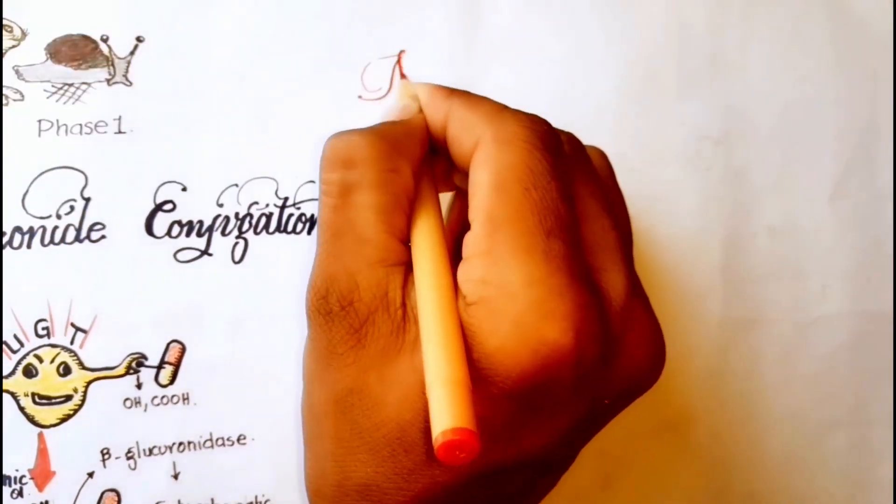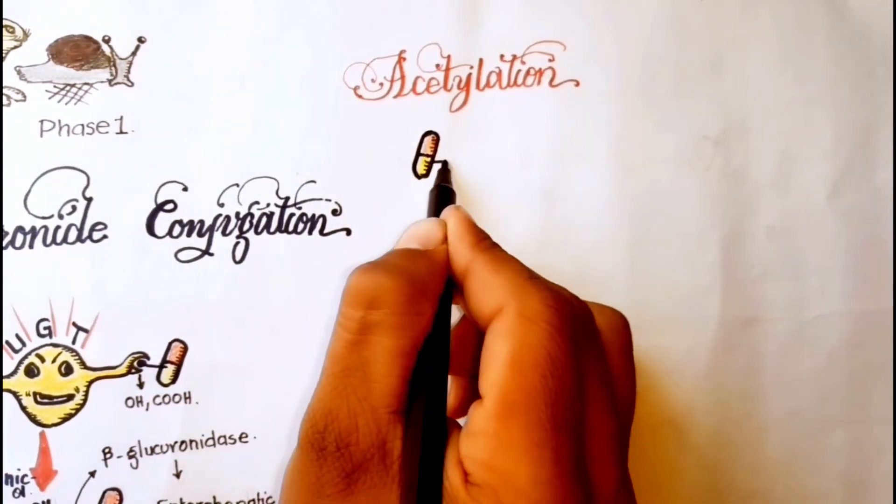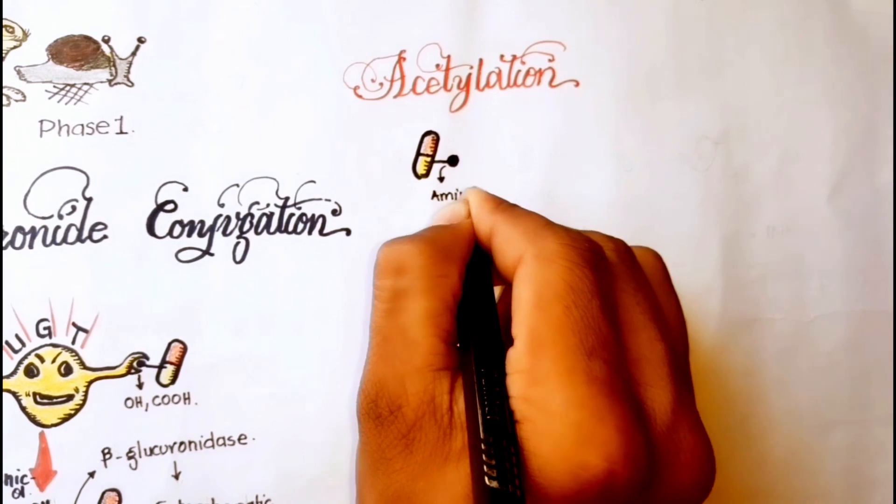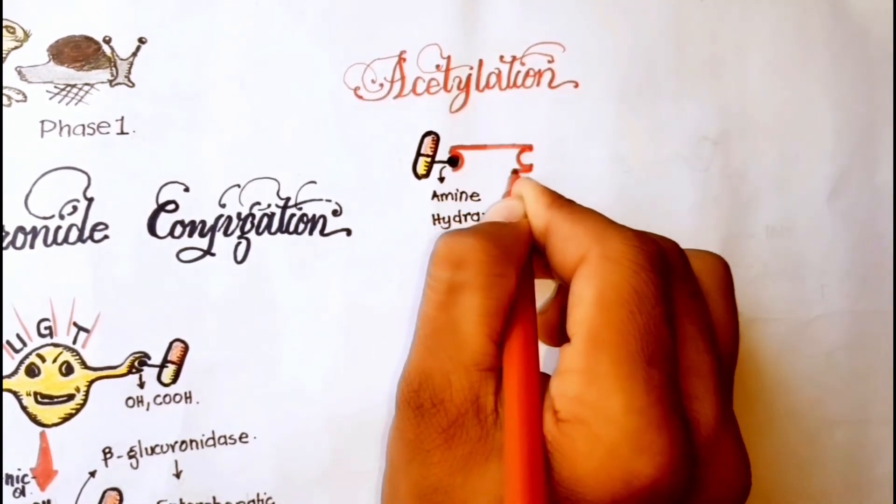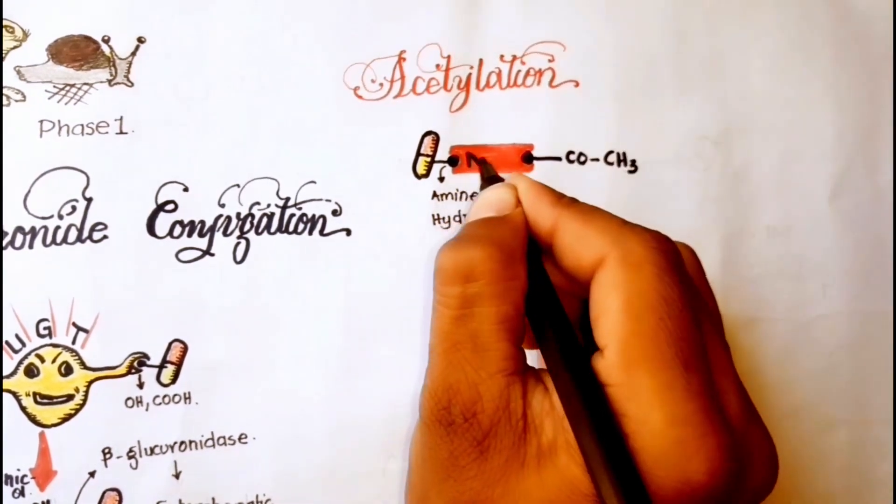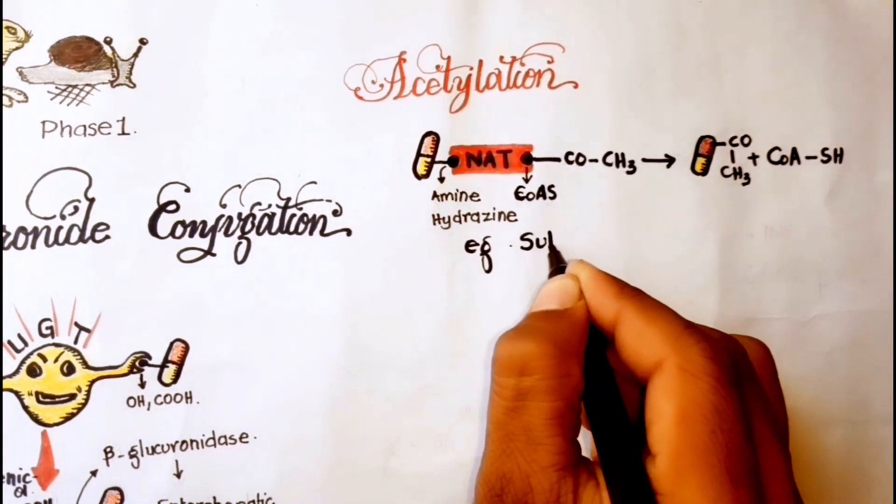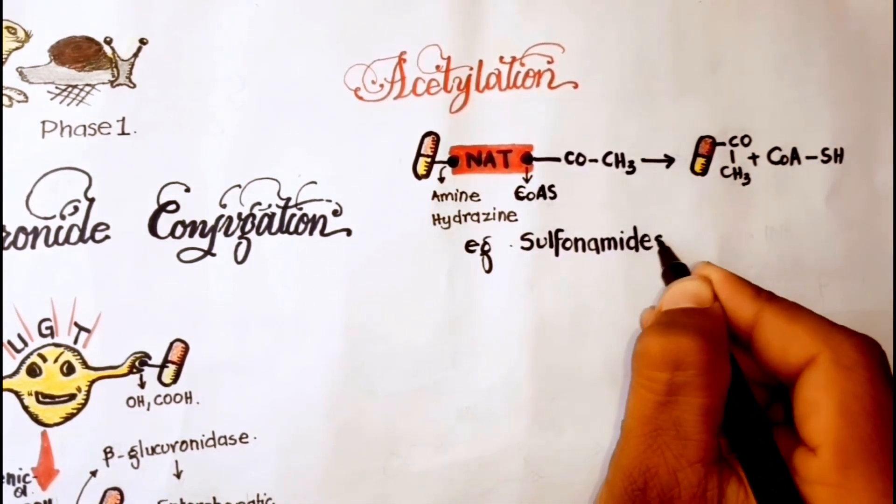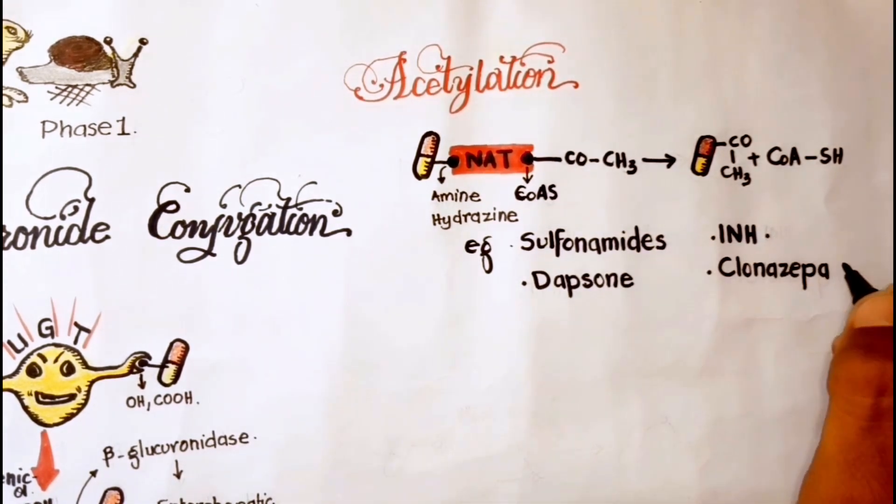Next is acetylation. Drugs that contain an aromatic amine or hydrazine group are conjugated with acetyl-coenzyme A with the help of an acetyltransferase. For example, sulfonamides, isoniazid, dapsone, and clonazepam.